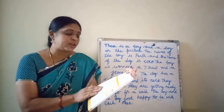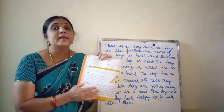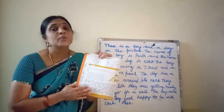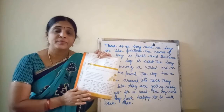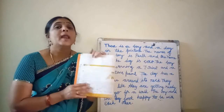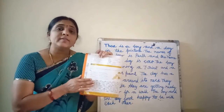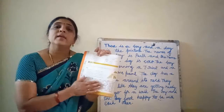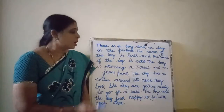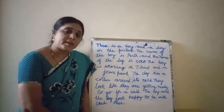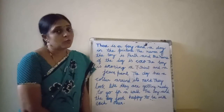Then, what are the person and the animal doing? The person and the animal are so happy, feeling very happy to be together. Now you have to add all the sentences and write in the blanks. Read along with me and then you can copy in your workbook.